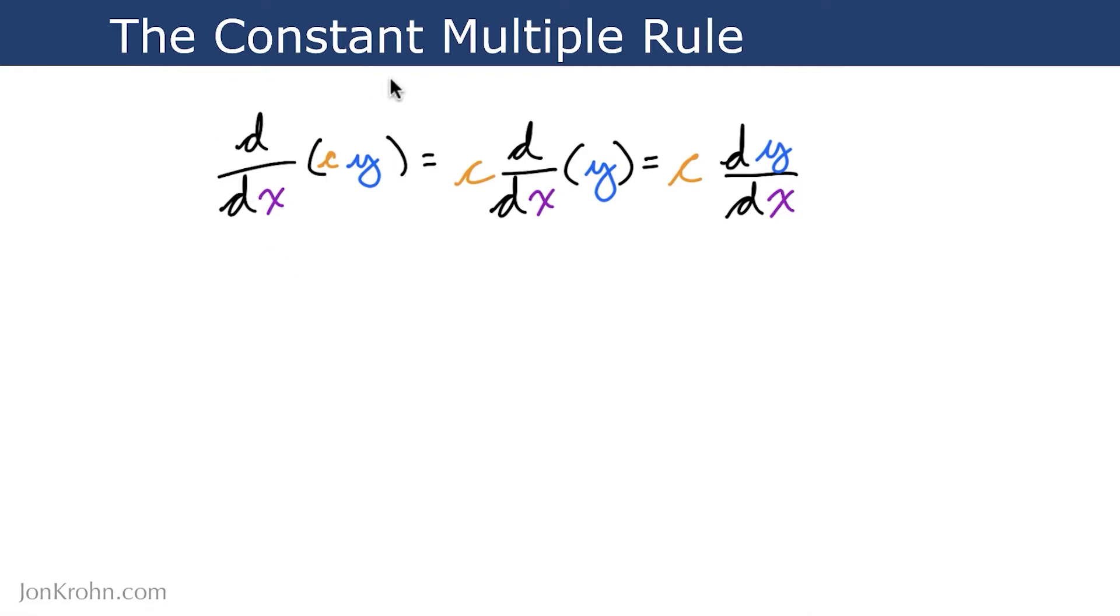With the constant multiple rule, we can take some constant and move it out of the way in front of our differentiation operation, calculate the derivative on whatever variables are left, and then we can bring the constant back into play afterward.